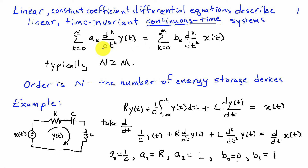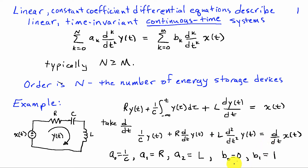Drawing a comparison to the general form, we can identify the weights a_k and b_k. a_0 is the term that multiplies the zeroth derivative of y, which is 1/C. a_1 multiplies the first derivative, which is R. a_2 multiplies the second derivative, which is L. On the right-hand side, there is no zeroth derivative of the input x(t), so b_0 equals zero, and the coefficient in front of the first derivative of the input is 1.